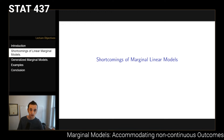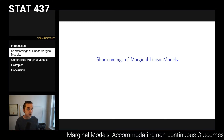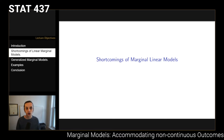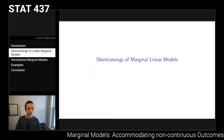The second shortcoming is that we've made strict distributional assumptions. Even if you are looking at continuous data, if those data don't conform to the normality assumption, then what we've talked about so far does not work. We've assumed normality and used that to accommodate longitudinal models, but if that normality assumption is violated, nothing we've done will function as described. Those are the two major shortcomings that we want to overcome with the concept of a generalized marginal model.